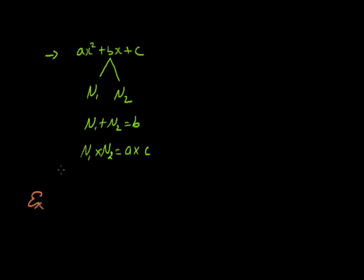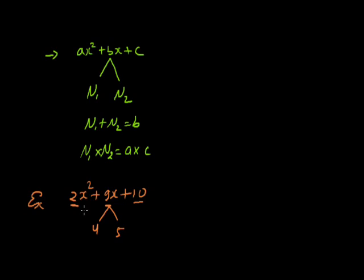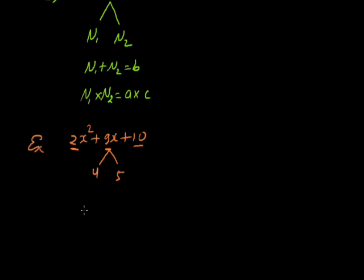Let's take one example: 2x squared plus 9x plus 10. Here the coefficient of x squared is 2, not 1. We have to split the middle term, 9, into two numbers. The two numbers are 4 and 5, because their sum is 9 and their product, 4 into 5, equals 20, which equals the product of the coefficient of x squared and the constant term, that is 2 into 10, which is 20. So we can split 9x into 4x and 5x.